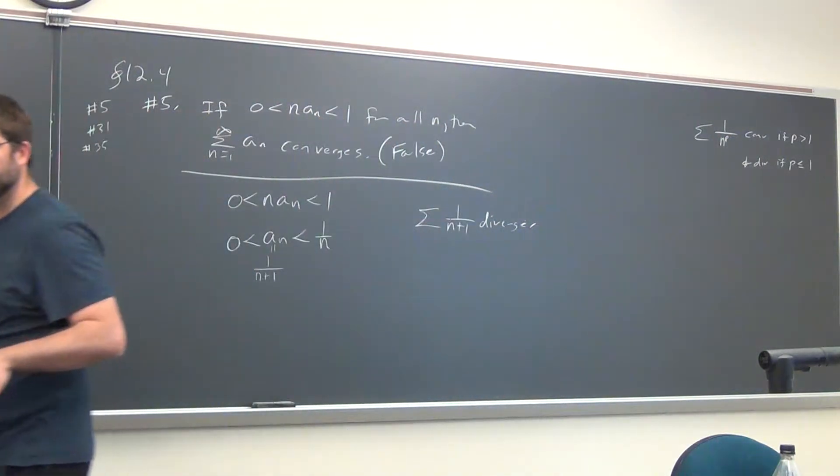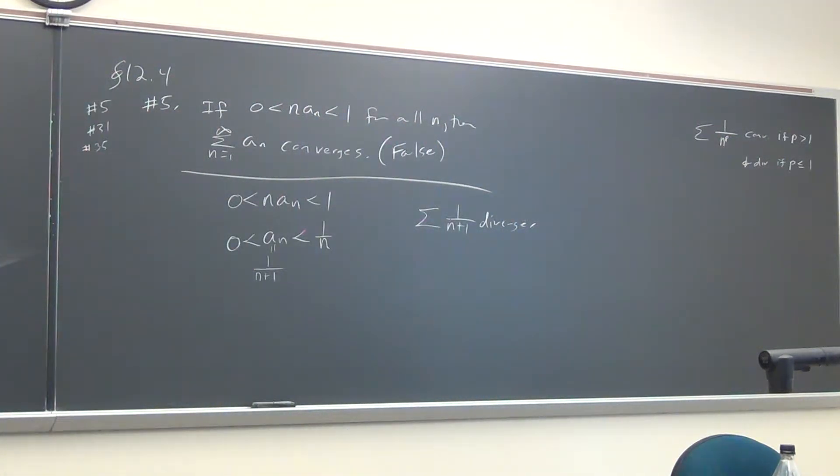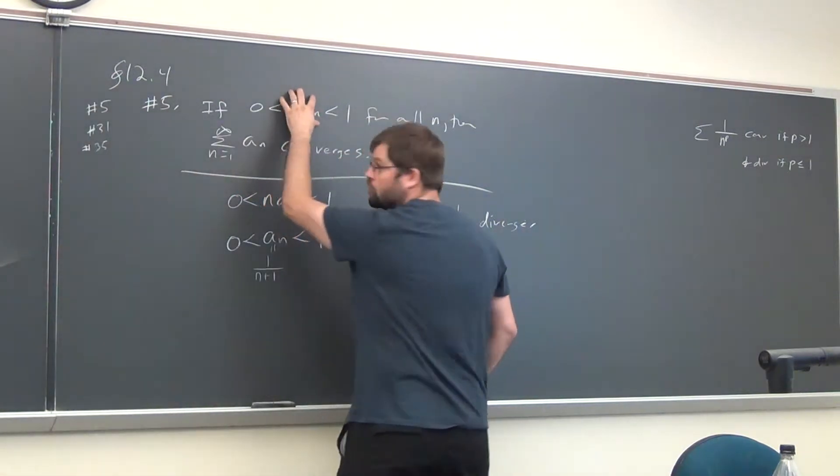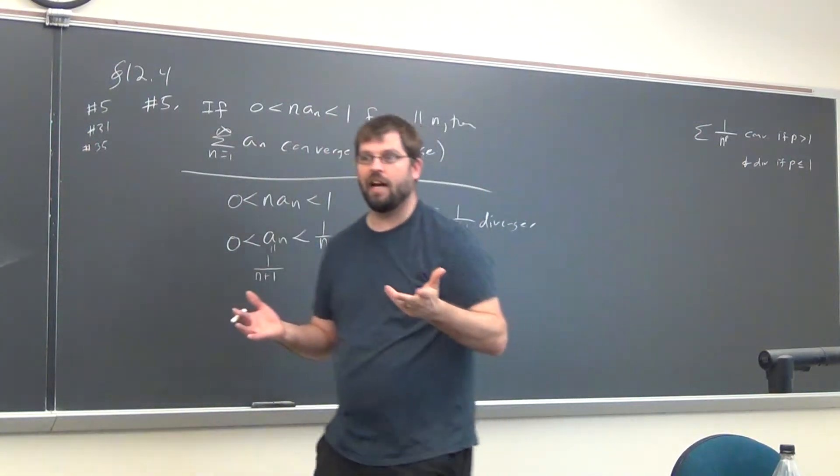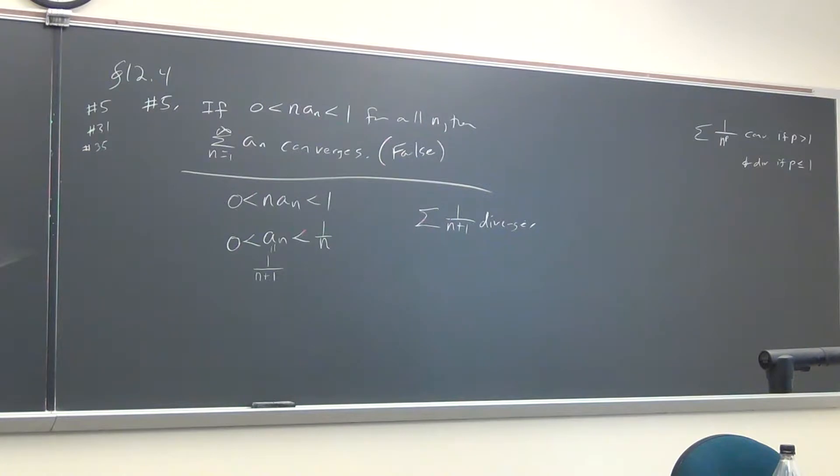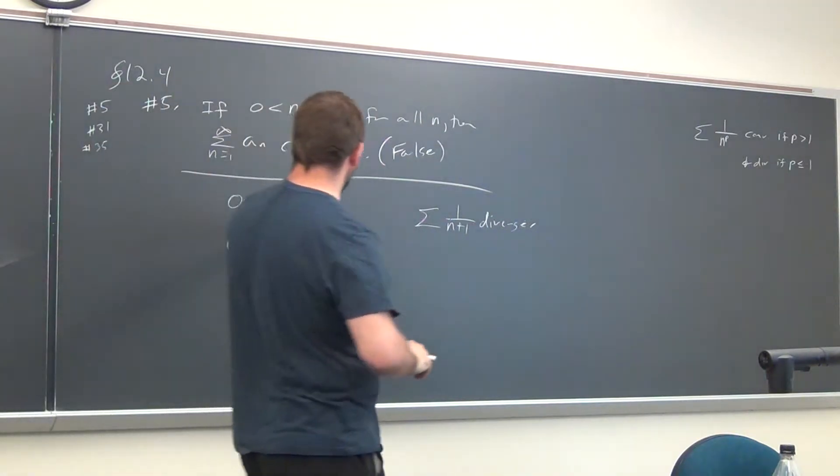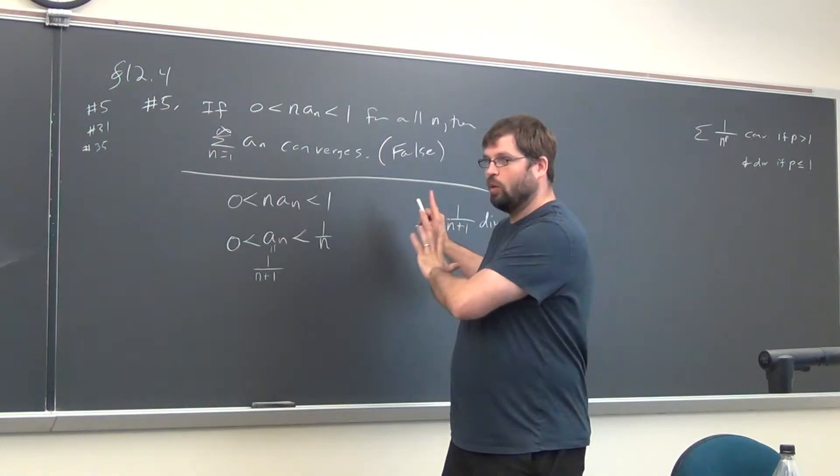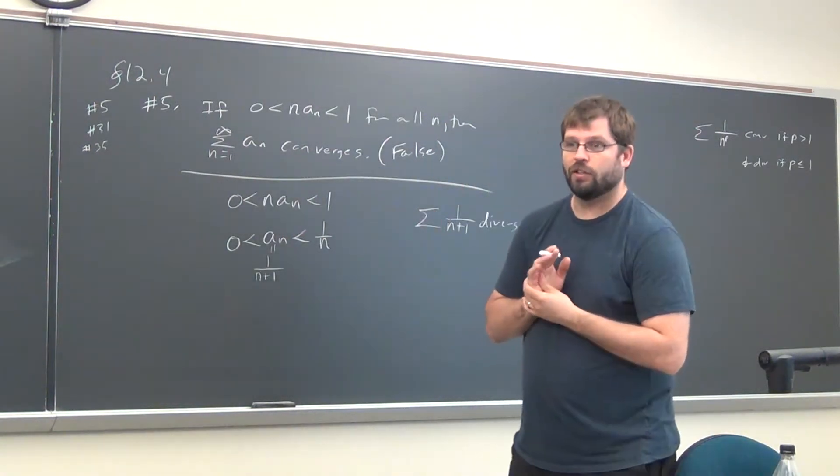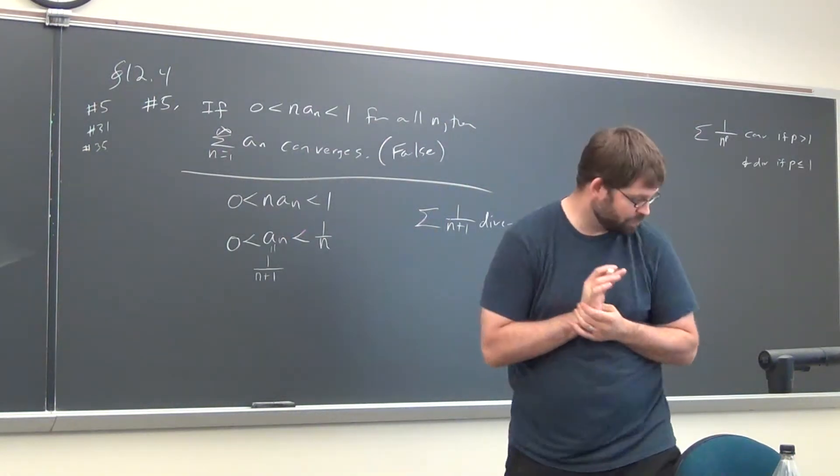You could also guess 1 over n squared - it would still converge. But when you see a statement that says if this is true, then that's true, that means any time this is true, it forces this to be true. So if you can find one example where it's not, then you're good. You definitely have examples that sit in here where it is true, but if you can find any one that's not, then we want false there.